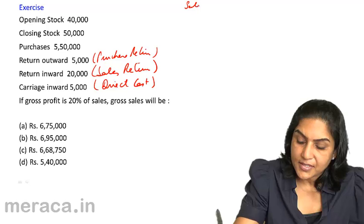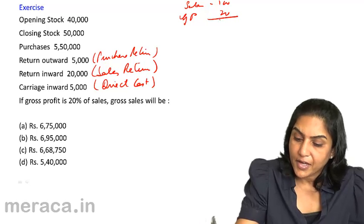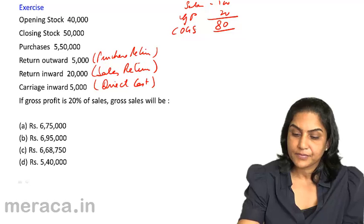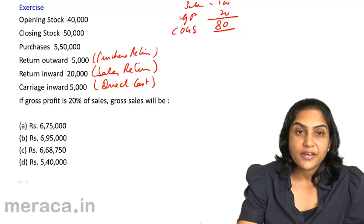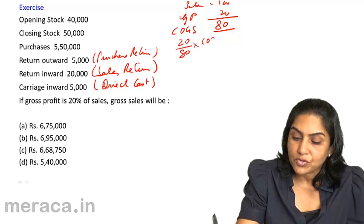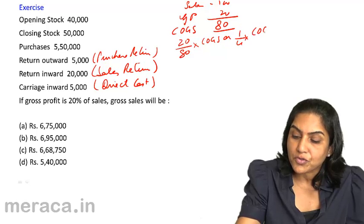If sales is 100, gross profit is 20, therefore cost of goods sold is 80. What is the relation of profit to cost of goods sold? Profit is 20 by 80 of cost of goods sold, or 1 by 4 of cost of goods sold.